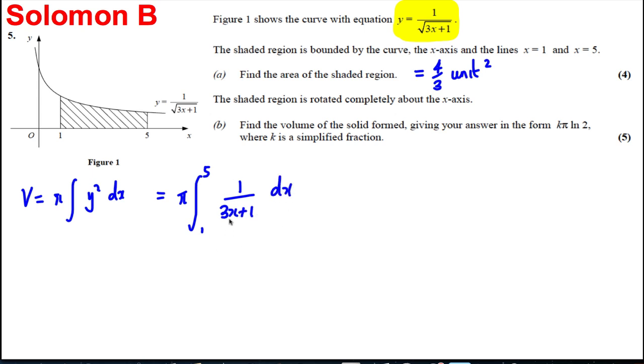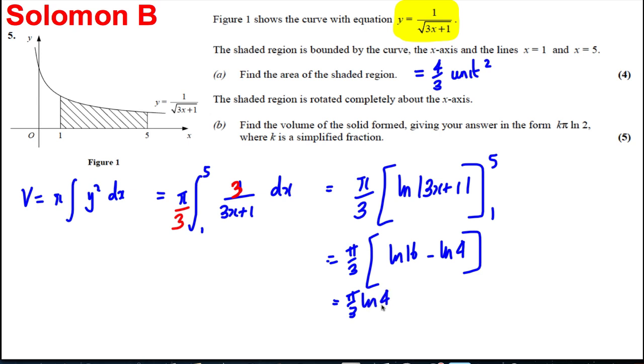Now this here is sort of an x to the power of negative 1. It's a ln answer. So keep the pi outside here. If I did put a 3 in there, so the top was the exact differential at the bottom, I'd have to divide by 3 outside to fix it. So I'm going to have myself pi by 3, ln of 3x plus 1, all between 5 and 1. So keep that pi by 3 there. Substitute in 5 and you get ln 16. Substitute in 1 and you get ln 4, so take away ln 4. When you subtract lns, you can divide them. So this is pi by 3, ln 4. And we're done in that regard.